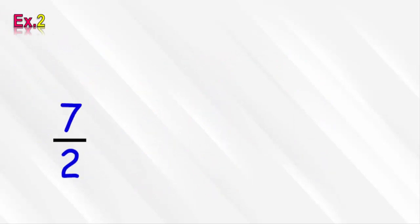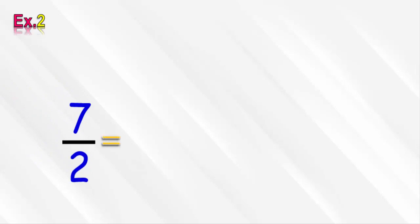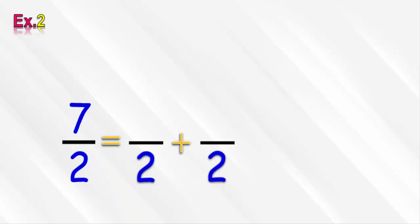Now let's solve another example. In this example we want to convert the fraction 7 over 2 into a mixed number. First we write the improper fraction in the form of a sum of 2 like-denominator fractions with denominator 2, like this.